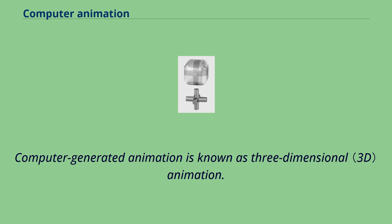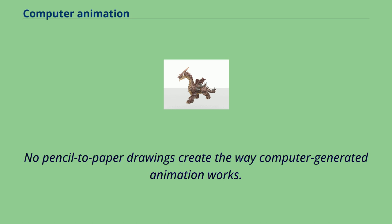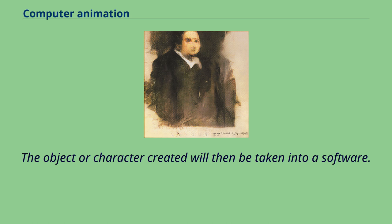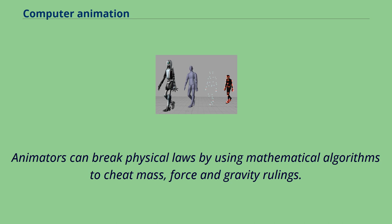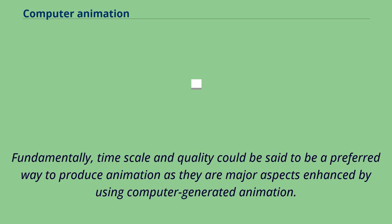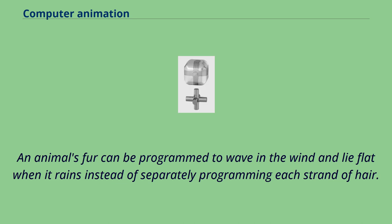Computer-generated animation is known as three-dimensional animation. Creators design an object or character with an X, a Y and a Z axis. No pencil-to-paper drawings create the way computer-generated animation works. Keyframing and tweening are also carried out in computer-generated animation, but so are many techniques unrelated to traditional animation. Animators can break physical laws by using mathematical algorithms to cheat mass, force and gravity rulings. Time scale and quality could be said to be a preferred way to produce animation. Another positive aspect of CGA is the fact one can create a flock of creatures to act independently when created as a group. An animal's fur can be programmed to wave in the wind and lie flat when it rains instead of separately programming each strand of hair.